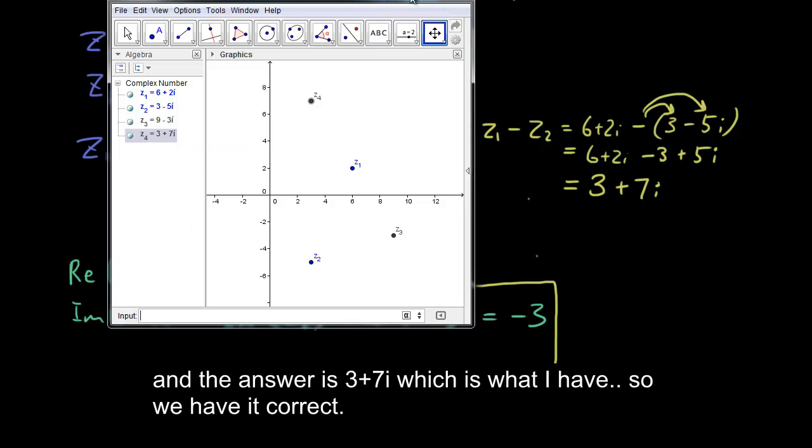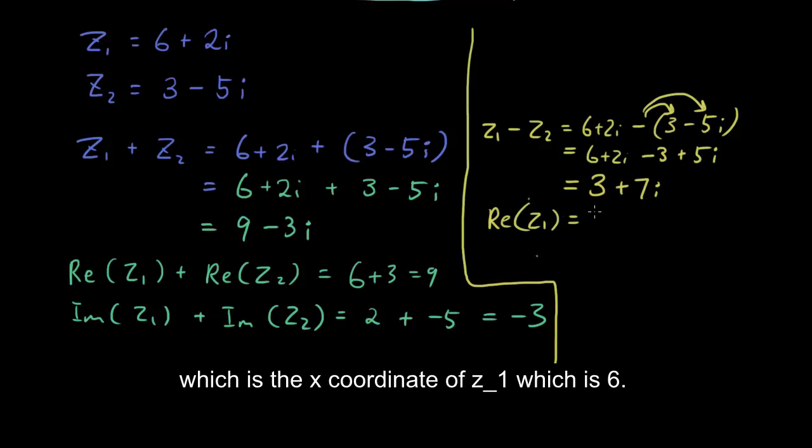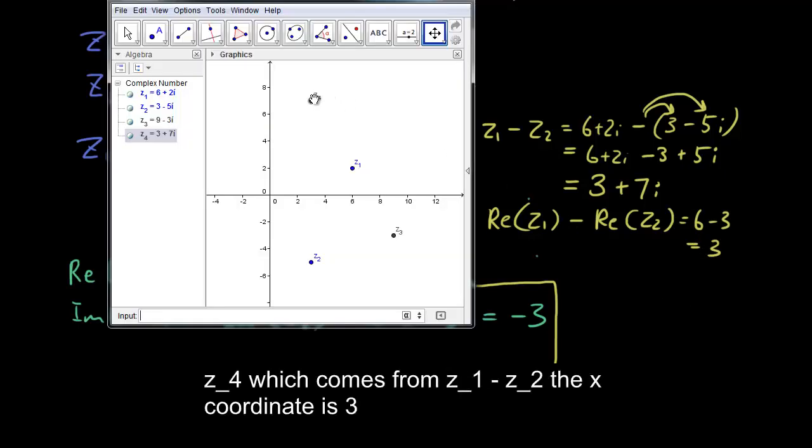So we have it correct. And now let's check that the x-coordinate, so the real part of z1, which is the x-coordinate of z1, is 6, minus the real part of z2, which is 3. So we have 6 minus 3, which is 3. And have a look at our z4, which comes from z1 minus z2.